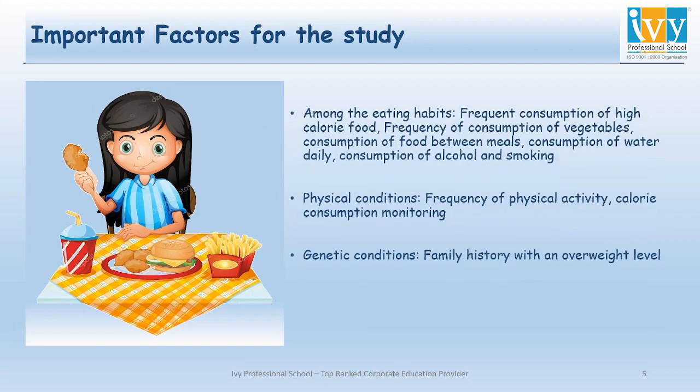Among eating habits, I have listed: frequent consumption of high calorie food, frequency of consumption of vegetables, consumption of food between meals, consumption of water daily, consumption of alcohol, and smoking. Among physical conditions: frequency of physical activity and calorie consumption monitoring. And I have taken into account the only genetic condition attribute, which is family history with overweight.